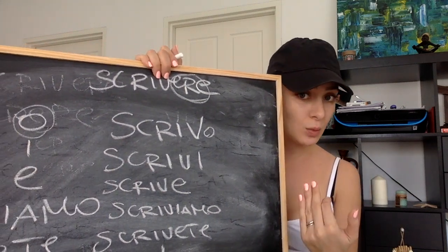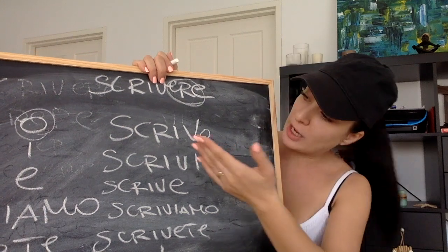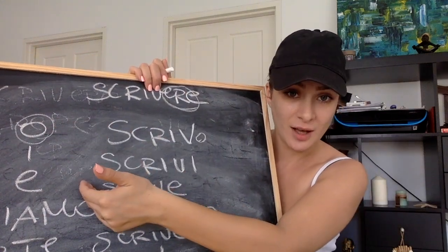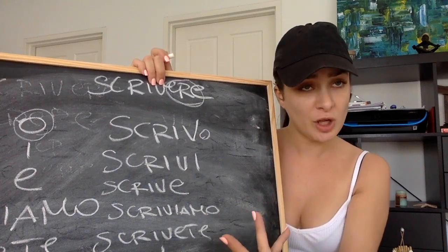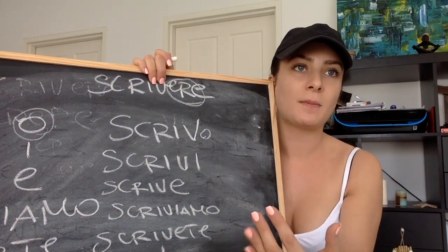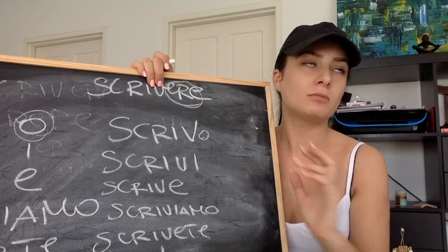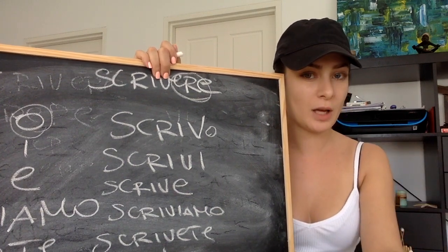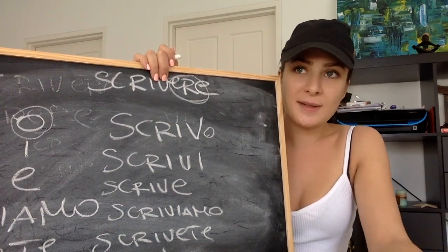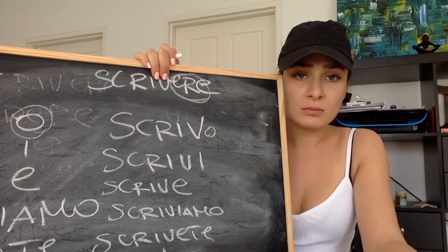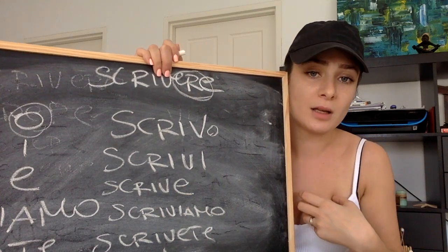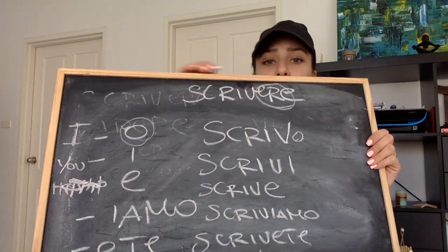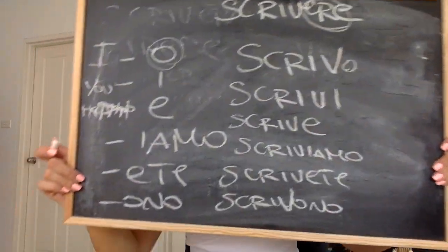In Italian we do the opposite thing: we change the verb, so we don't need to put the subject. Sometimes you add the subject just to emphasize that you are doing something — not him, for example. But usually, if I say 'scrivo', people know that it's me writing. So these are the endings for the -ere verbs: O, I, E, YAMO, ETE, ONO.